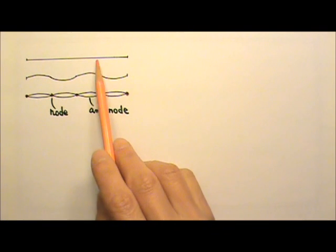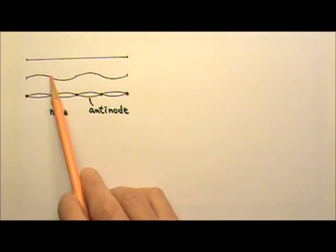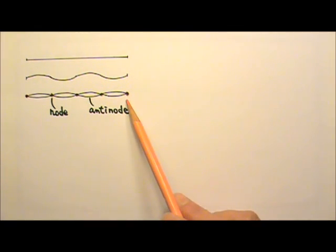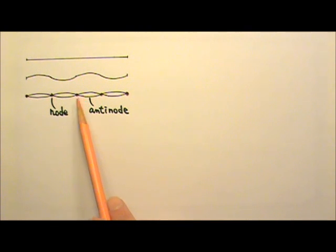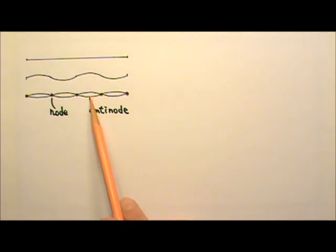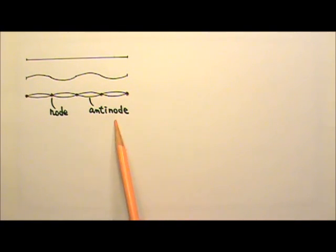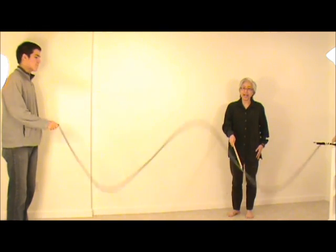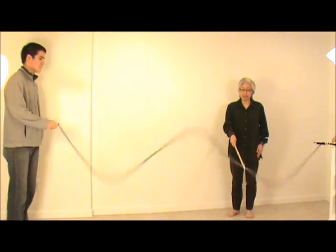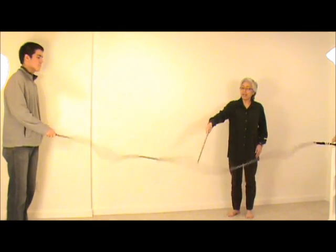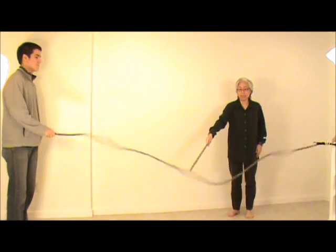When we draw standing waves on a string, instead of drawing the rope at one moment, we often draw it this way to show that the string oscillates in loops. The points with no oscillation are called nodes. The points oscillating with the largest amplitude are called anti-nodes. Since there is no vibration at a node, I can touch a node and the vibration can still go on. However, if I touch an anti-node, I can mess up the standing wave.